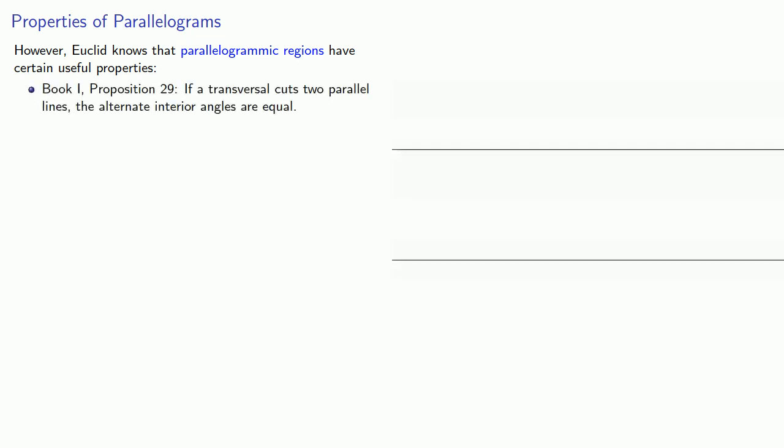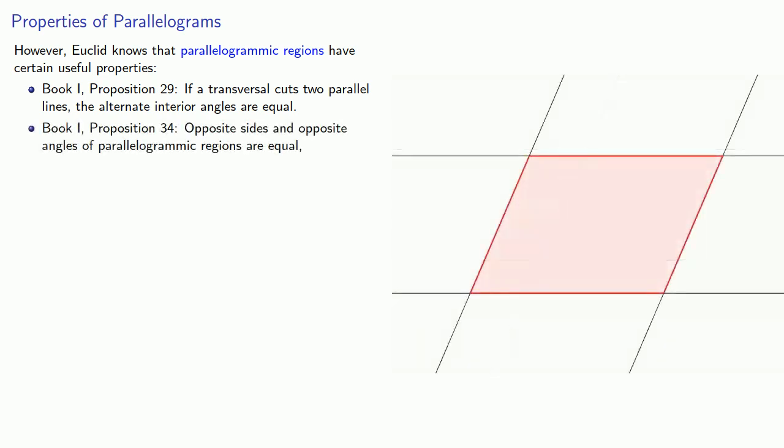So, Euclid proves an important property of parallelograms. Book 1, Proposition 29. If a transversal cuts two parallel lines, the alternate interior angles are equal. And this allows him to prove opposite sides and opposite angles of parallelogramic regions are equal.